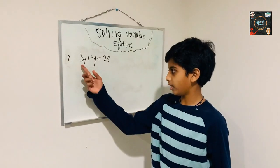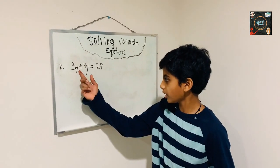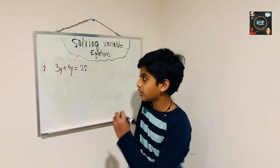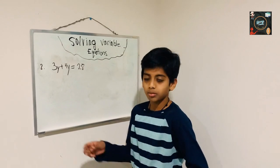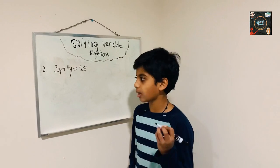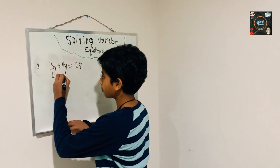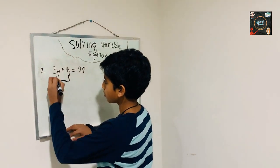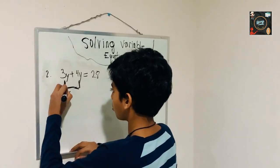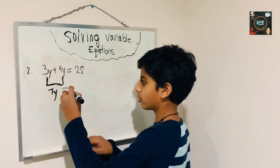In this type of equation we have to look for similar variables. Since we have a y here and a y here, what we need to do is add them up, because they both have the same variable. Whenever we have the same variable we have to add them to each other. Now let's add them up — and we get 7y.